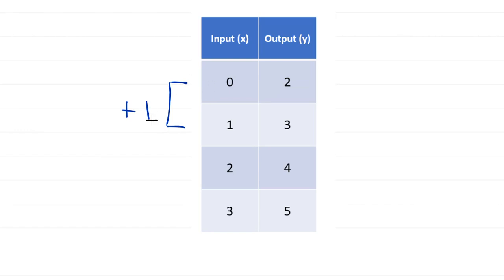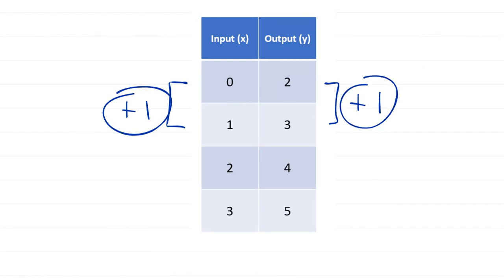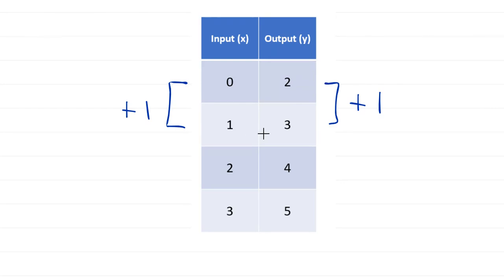For that same increase of 1 from 0 to 1 in our input, our output went from 2 to 3 — that also increased by 1. It's just a coincidence that these are the same numbers; that's not always going to be the case. But what this means is: if it's a linear function in this table, every increase of 1 in x should give me an increase of 1 in y.